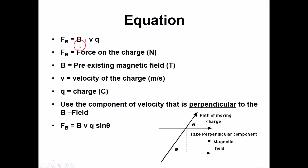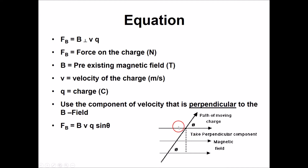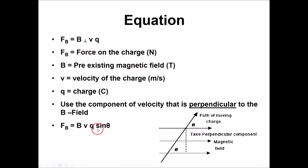The equation is F = BvQ — the magnetic field times the velocity of the charge times the value of the charge itself. It's important to know that the magnetic field and the velocity need to be perpendicular to each other. If a charge comes in at an angle, you want the component of velocity that is perpendicular to the field.